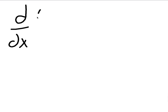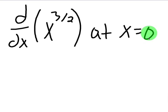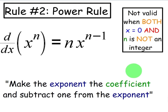Let's say we're trying to find the derivative of x to the 3/2 at x equals 0. Notice two things: first of all, it's at x equals 0, so that's a red flag. Secondly, n, the exponent, is not an integer, so we can't use the power rule here. The derivative would not be 3/2 · x to the 1/2, and then plug in 0 to get 0. If you look at the graph of this function, the derivative doesn't exist at 0 — the tangent line doesn't exist at 0. So just be aware of that exception.